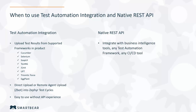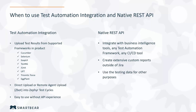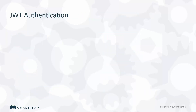The REST API is useful if you want to integrate with any business intelligence tools, any test automation frameworks not supported by our direct product integration, or any CI/CD tool available. You can then take this data and feed it into extensive custom reports outside of Jira if there are other platforms you're using for your data. Overall, any use of the testing data or any purpose you may have generally, you can use this REST API to pull directly from Zephyr.